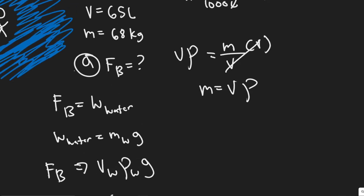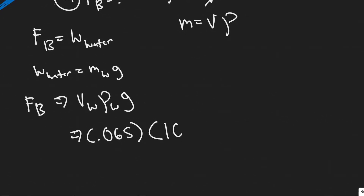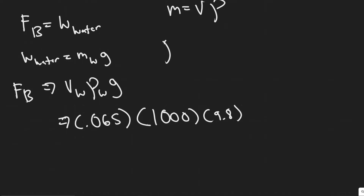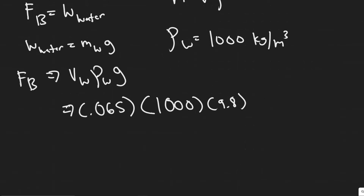So you have 0.065 meters cubed, and you multiply that by the density of water, which is 1000 kilograms per meter cubed, then multiply by g, which is 9.8 meters per second squared. Notice how the units work: meters cubed cancels with per meter cubed, leaving kilograms times meters per second squared, which gives you newtons. So 0.065 × 1000 × 9.8 gives a value equal to 637 newtons — that's your buoyant force.